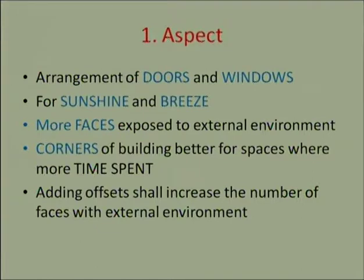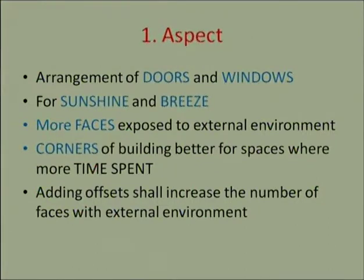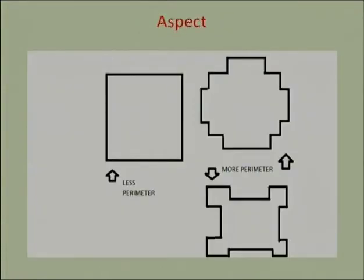The first principle is aspect — the arrangement of doors and windows of spaces for better sunshine or breeze, so more faces should be exposed to the external environment. For better sunshine and breeze, if more sides of any room are exposed to or touching the external environment that is more advantageous. If only one side out of four sides of a room is facing the external environment that is not better. More faces facing the external environment means better sunshine and breeze in the room.